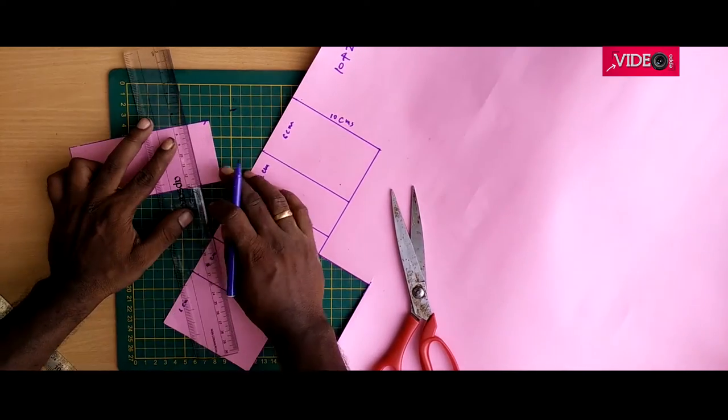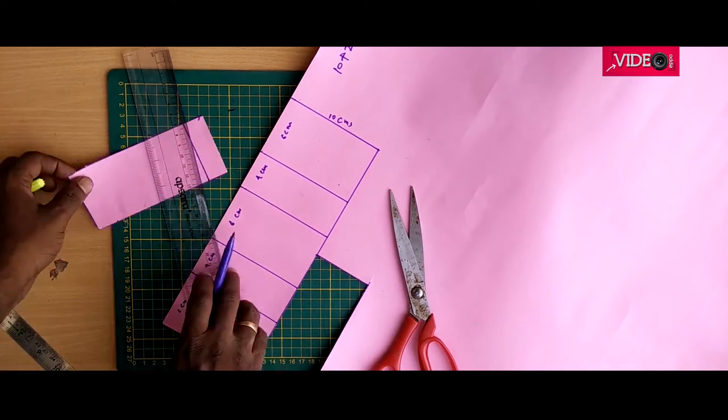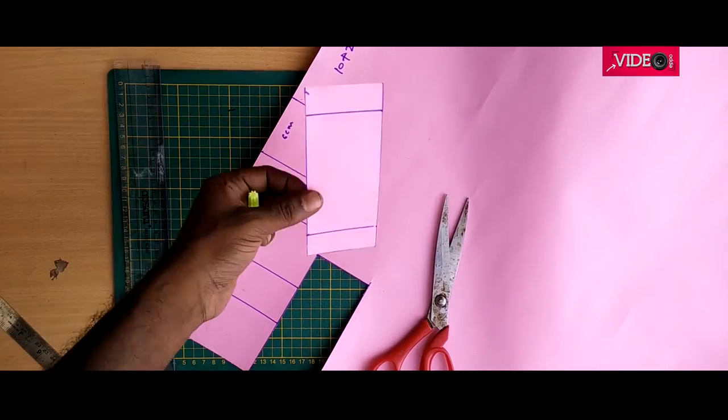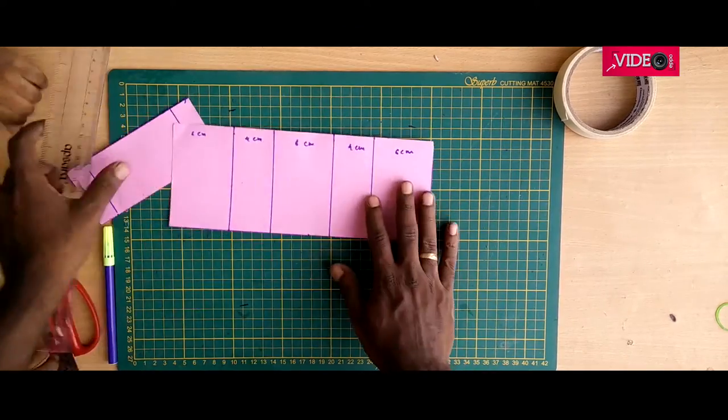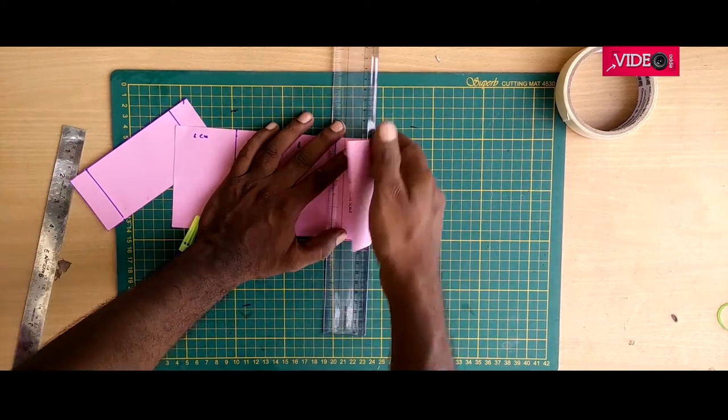On the smaller strip mark 2 centimeters on either side of the fold. It's time to fold as per the markings. Use a ruler for straight folds.